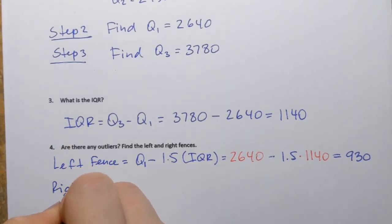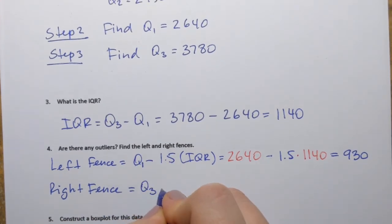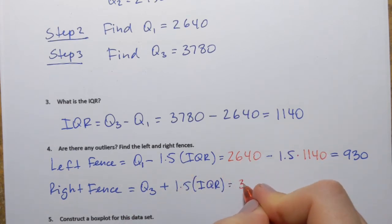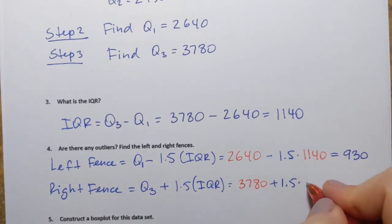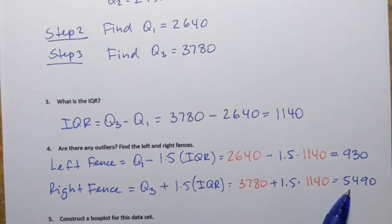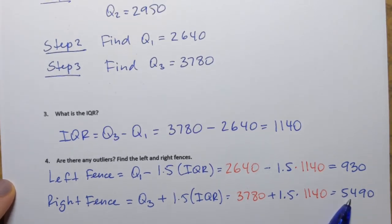So there are no extremely small values in the data set. How about the right fence? For that, I have to take Q3 and now add 1.5 times IQR. So that's 3,780 plus 1.5 times 1,140. And that gives me 5,490. So that's the value for the right fence. We're not going to place those on the box plot, but we're going to use it to identify any outliers on the right hand side, any extremely large values. Let's check. Do I have any values on the data set that are more than 5,490?